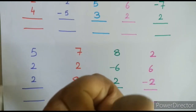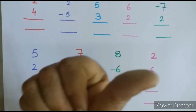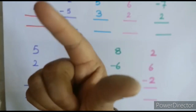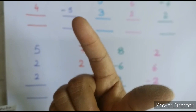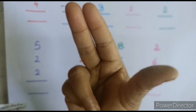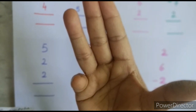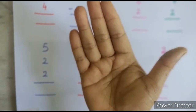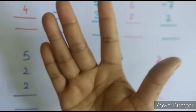To represent digit 6, we first open our thumb which represents 5, then open 1 finger — so 5 plus 1 is 6. For 7, we open the thumb and then open 2 more fingers: 5, 6, 7. For 8, we open the thumb and 3 fingers: 5, 6, 7, 8. To represent 9, we open the whole hand: 5, 6, 7, 8, 9.